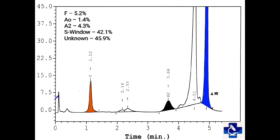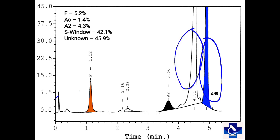In this slide, we have an unknown fraction falling at a retention time of 4.9%. We have the S window having 42.1%. A2 is elevated at 4.3% and fetal hemoglobin is 5.2%. So this slide shows the compound heterozygous output of hemoglobin S and hemoglobin O Arab.